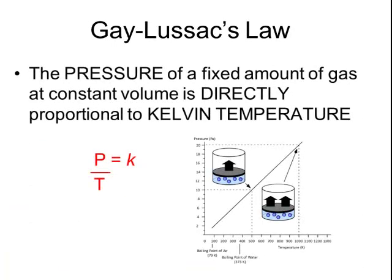Gay-Lussac's Law is officially stated that the pressure of a fixed amount of gas at constant volume is directly proportional to its Kelvin temperature. Again, notice the temperature has to be in Kelvin rather than degrees Celsius, so you'll need to convert. The mathematical relationship can be stated pressure divided by temperature equals some constant value.